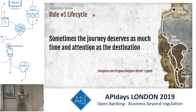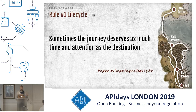Rule number one. In a D&D game, what is important is not saving the kingdom from some evil sorcerer — what is important is the story the party will live and what they will do to achieve this legendary victory. An API design review is not a one-stop journey; it must follow a complete life cycle in order to be efficient.